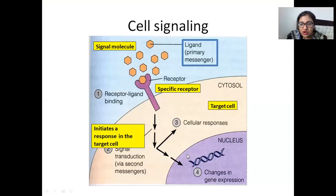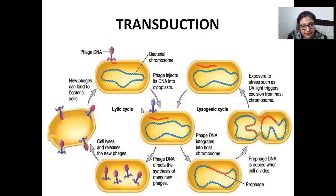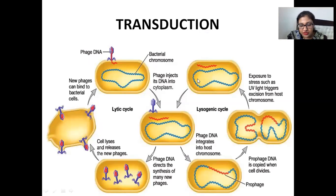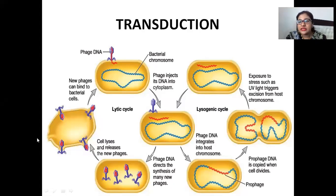So a single molecule attaches and produces changes all the way in the nucleus, instructing it what kind of proteins should be made, and as a result specific proteins are made. That is signal transduction. What is transduction then? Transduction is about when viral DNA adds up into the bacterial chromosome — the viral DNA merges with the bacterial DNA in order to produce more viral DNA, and as a result the viral DNA takes hold of the cell.